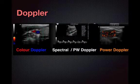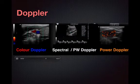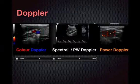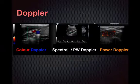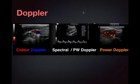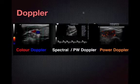There really are three main types of Doppler: the color Doppler, the spectral or pulse wave Doppler, and lastly the power Doppler. This video is really only going to go over power Doppler.